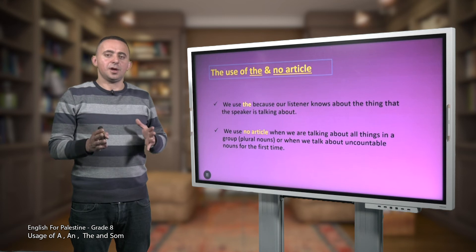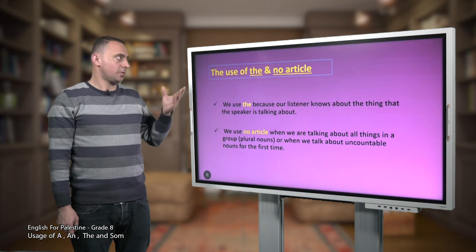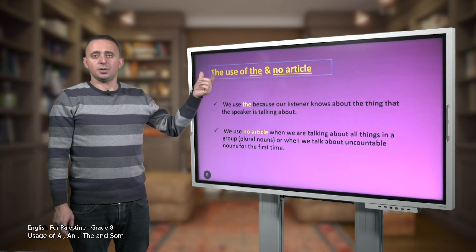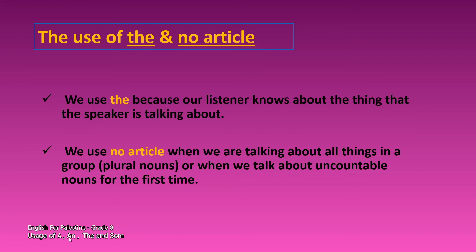As you have just seen in the previous examples, we use 'the' and no article in different situations. We use 'the' because our listener knows about the thing the speaker is talking about — it's a definite article used for something particular. We use no article when we are talking about all things in a group, with plural nouns in general, or when we talk about uncountable nouns for the first time.